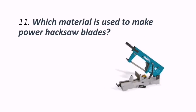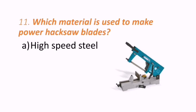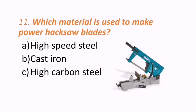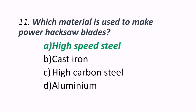Eleventh question: which material is used to make power hacksaw blades? Options are high speed steel, cast iron, high carbon steel, or aluminum. The correct answer is high speed steel. A is the correct answer.